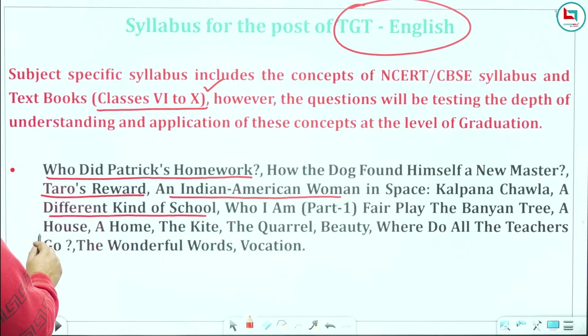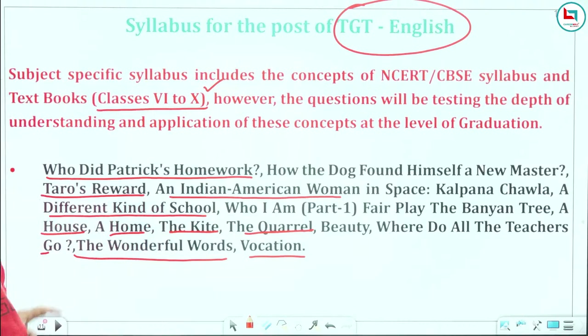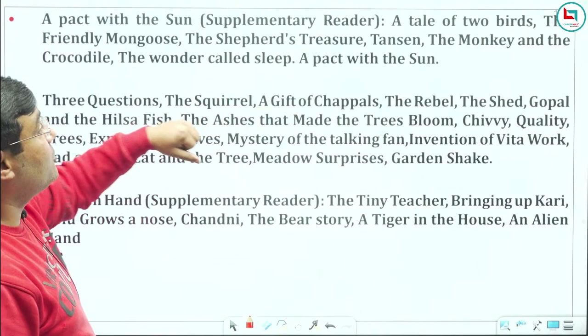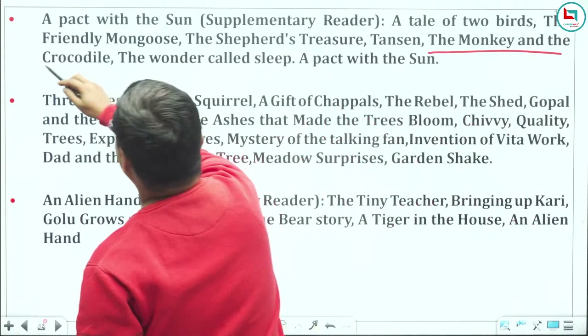Literature works include: A House, A Home, Kite, Quarrel, Beauty, Where Do All the Teachers Go, Vocation, Pact with the Sun (Supplementary), Tale of the Two Birds, Friendly Mongoose, Shepherd's Treasure, Tansen, The Monkey and the Crocodile, Dear Uncle Crocodile, Come and Take a Bite. These are very basic things you studied earlier.